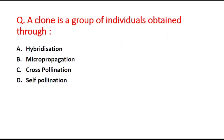The first question: a clone is a group of individuals obtained through blank. Option A is hybridization, option B is micro propagation, option C is cross-pollination, and option D is self-pollination. A clone is a group of individuals obtained through micro propagation, so option B is the right answer.